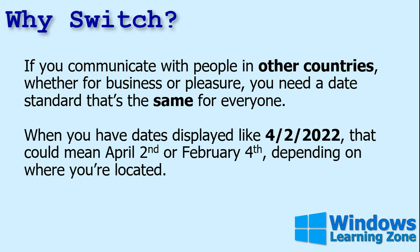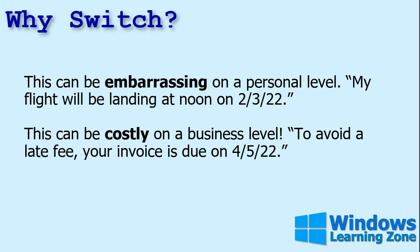If you communicate with people in other countries, whether for business or pleasure, you need a date standard that's the same for everyone. When you have dates displayed like 4-2-2022, that could mean April 2nd or February 4th, depending on where you're located. This can be embarrassing on a personal level — like 'my flight will be landing at noon on 2-3-22' sent in a text — or it can be costly on a business level. Your invoice is due on 4-5-22: is that April 5th or May 4th?